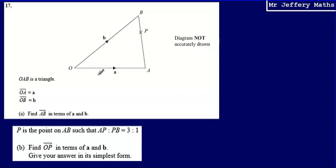This is question 17. We're told that OAB is a triangle, that the vector OA is equal to a, and that the vector OB is equal to b. We're asked to find the vector AB — the vector from A to B — in terms of a and b.